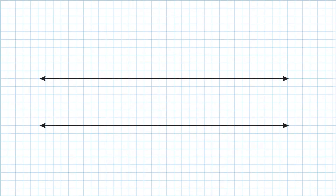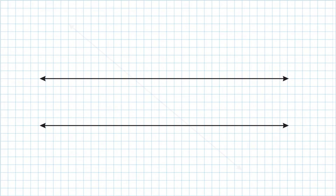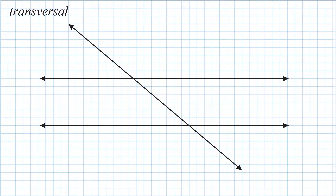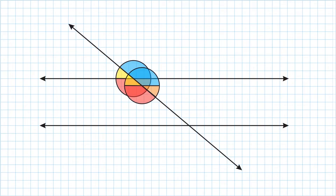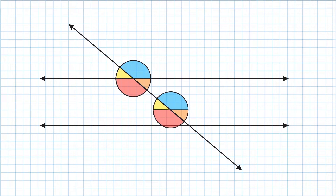Let's start with this set of parallel lines. We're going to take these lines and cross them with a transversal. A transversal is a line that crosses two or more lines. The lines don't have to be parallel, but we are going to look at the specific example of a transversal crossing parallel lines. Something we should notice is that we have a total of eight different angles.